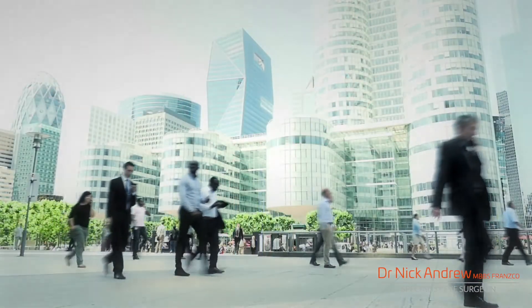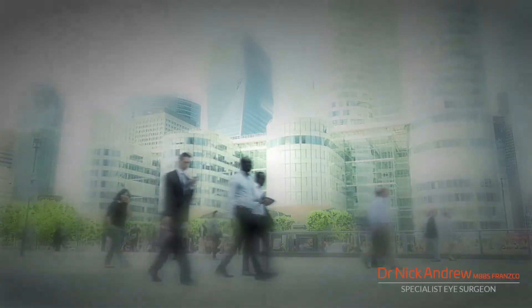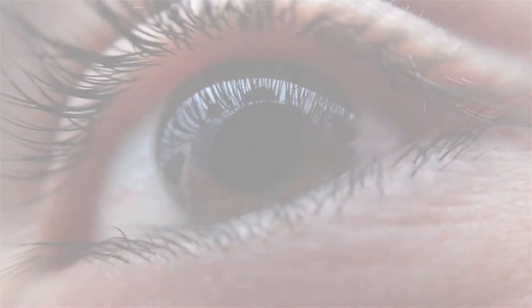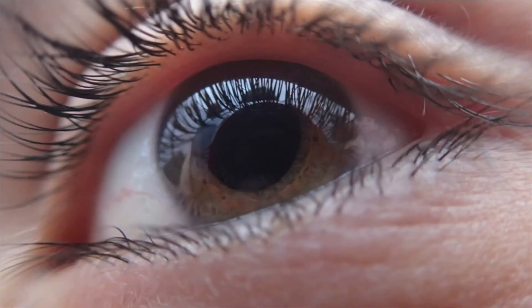Glaucoma causes gradual loss of vision, usually affecting the peripheral vision first. Individuals with glaucoma cannot feel that their pressures are high, and they are usually not aware that they are losing their vision until the damage is very advanced.